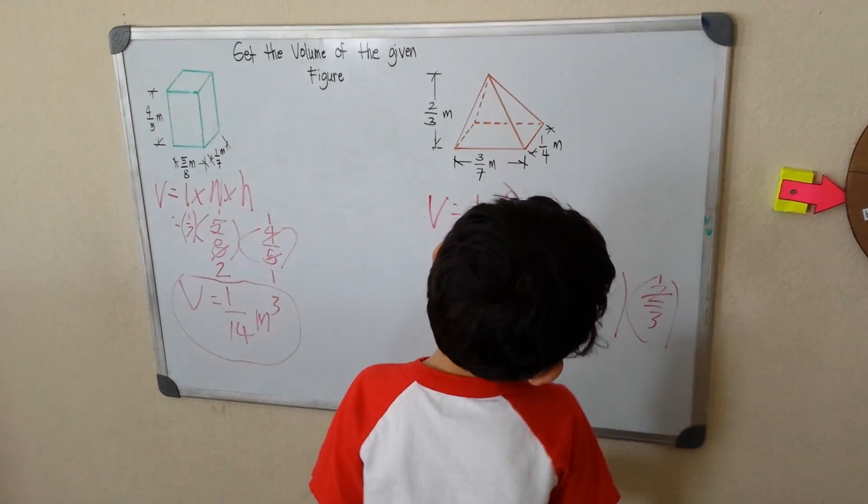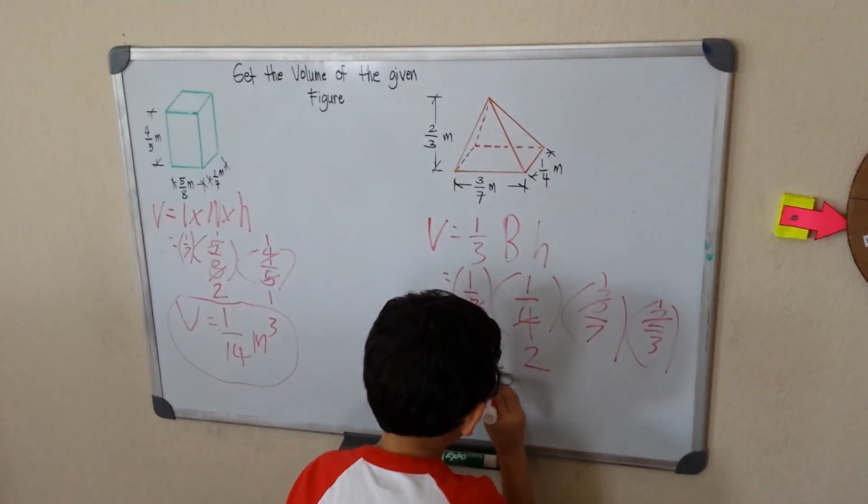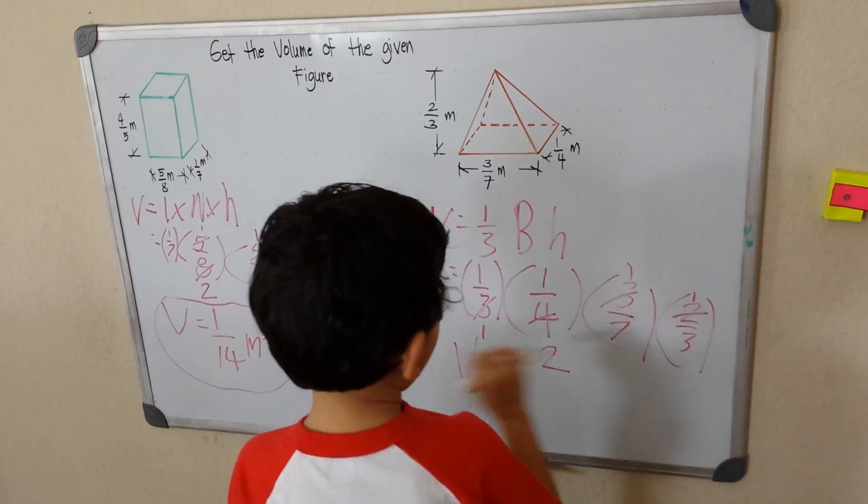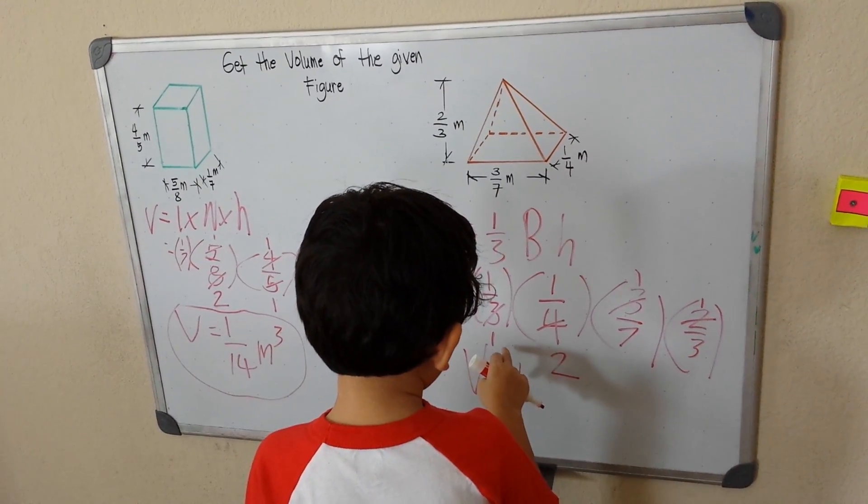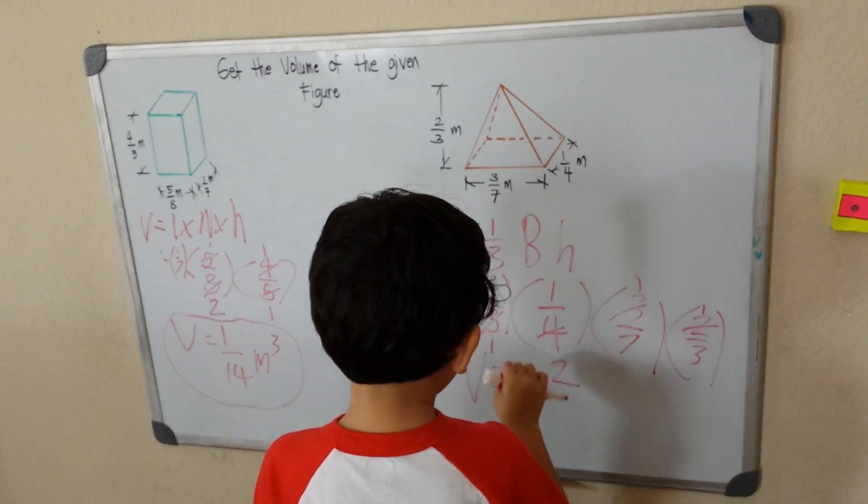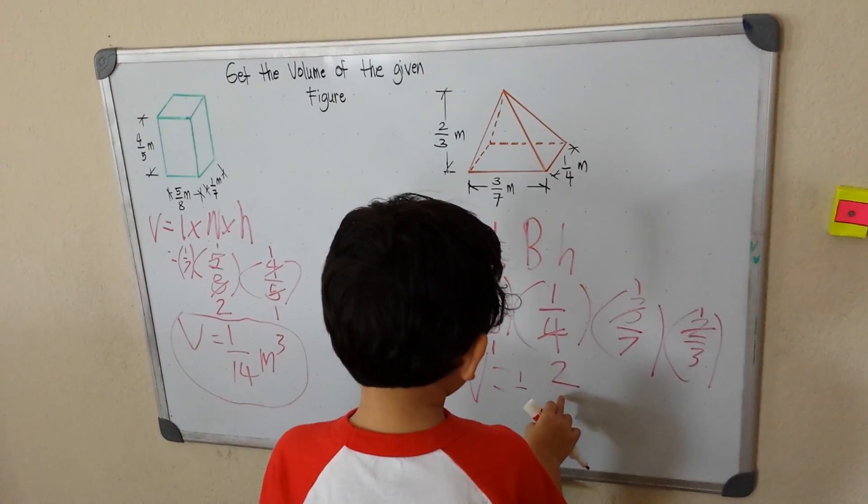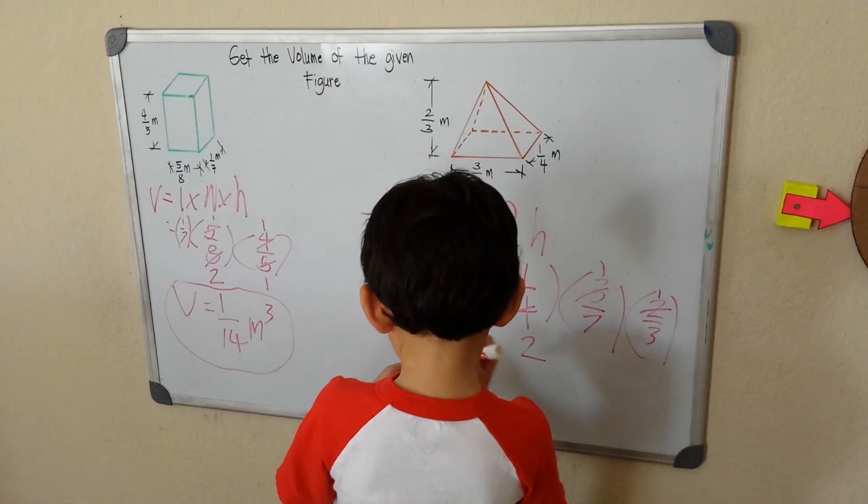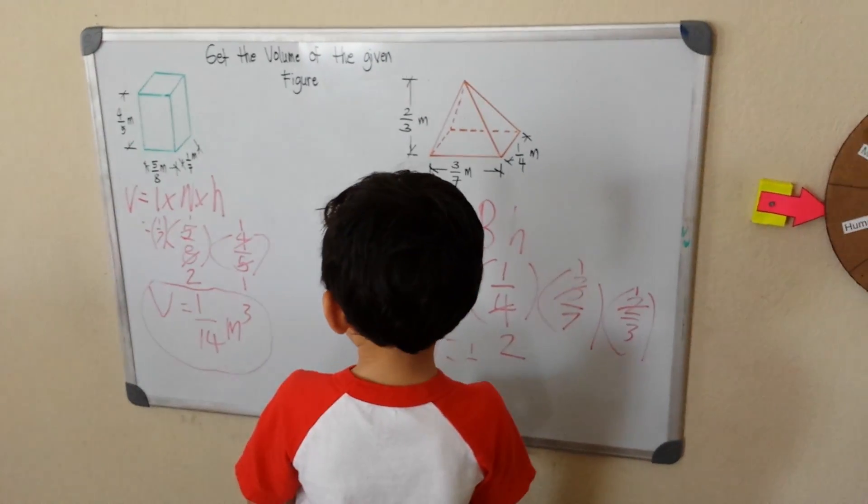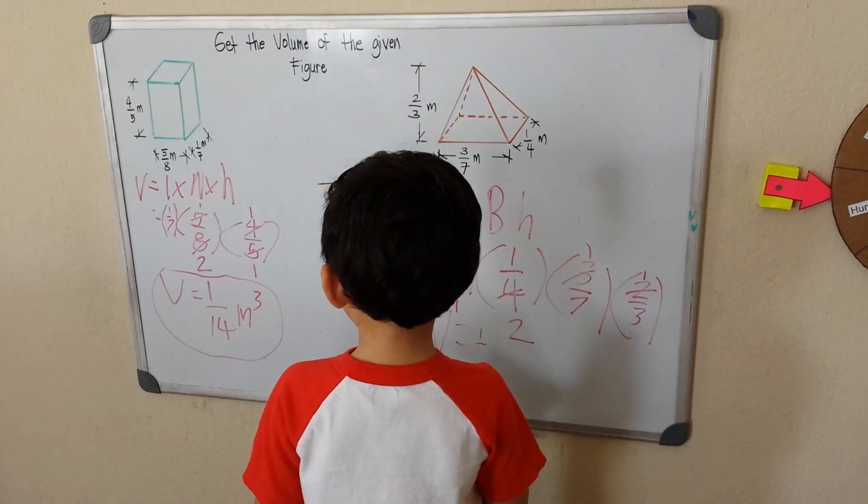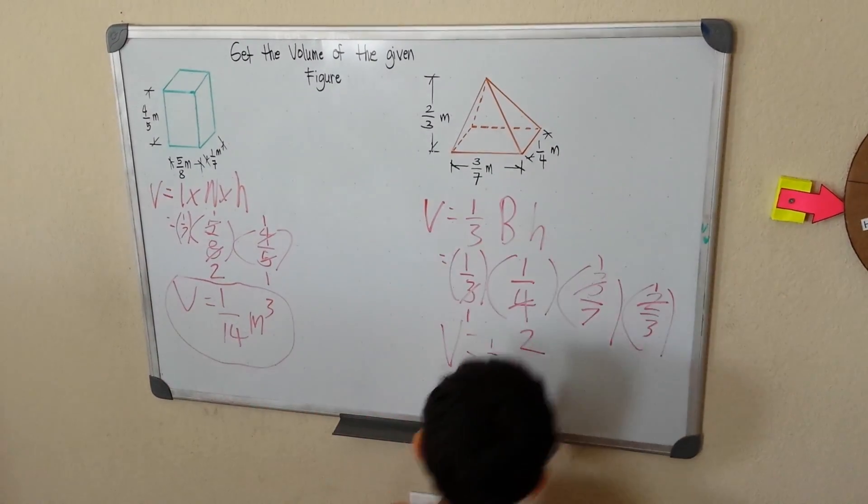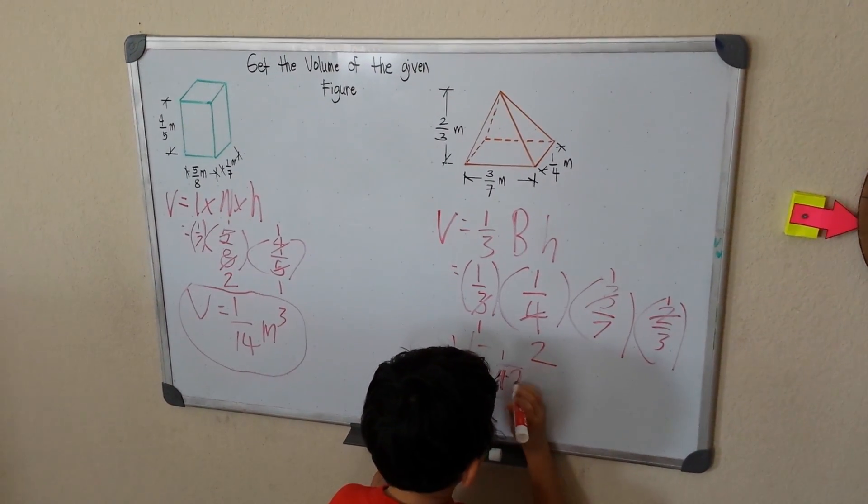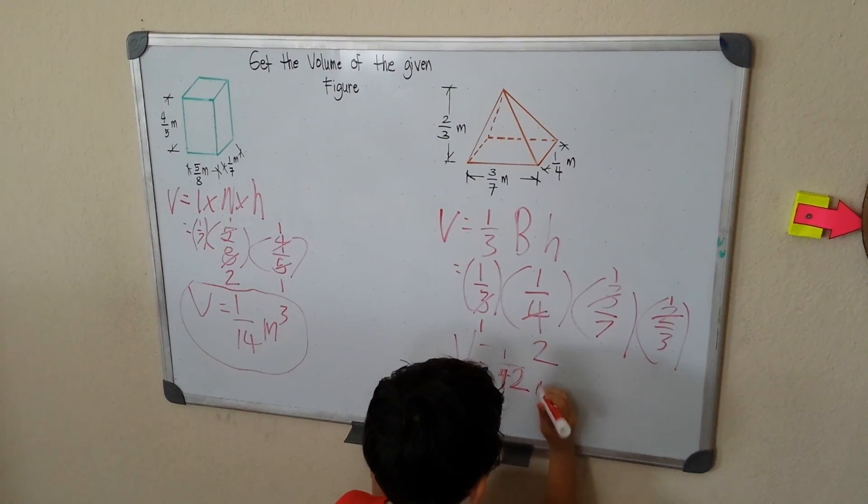So I have 1 times 1 times 1 times 1, that's 1. 1 over... 1 times 2 is 2, times 7 is 14, then 14 times 3... 28, 42. That equals 42. So 1 over 42 meters.